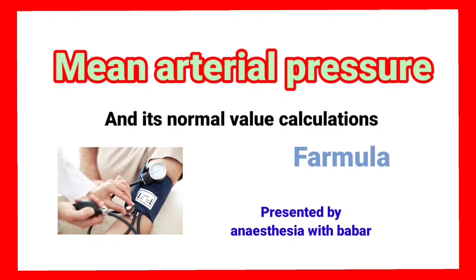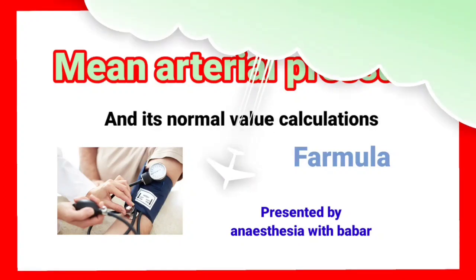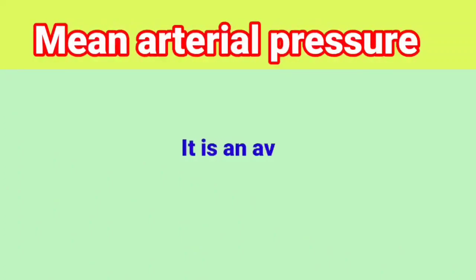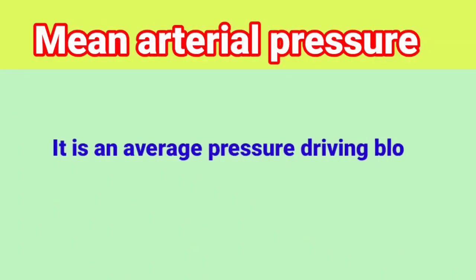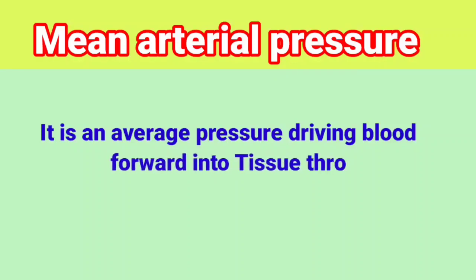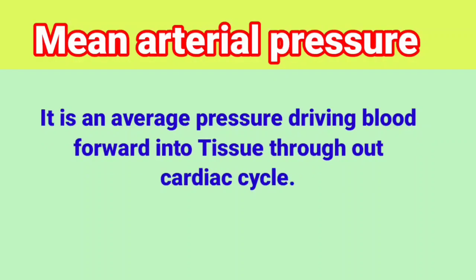Mean Arterial Pressure: Definition and its Normal Value Calculations, presented by Anesthesia with Babar. Mean Arterial Pressure is an average pressure driving blood forward into tissue throughout the cardiac cycle.